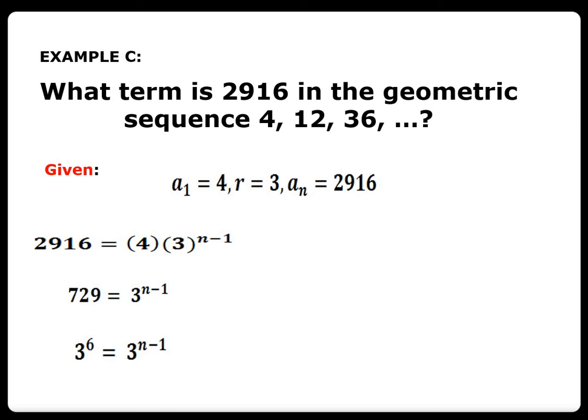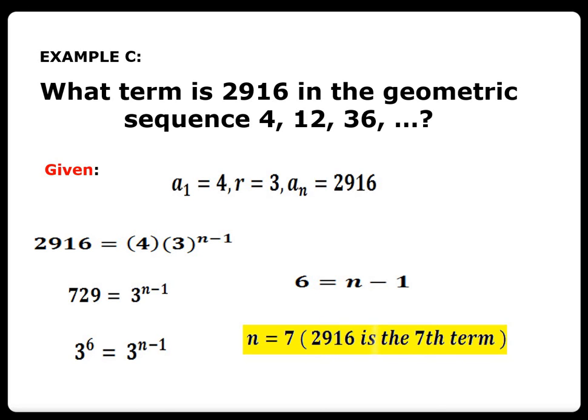If they have the same base, just copy the exponent. So 6 equals n minus 1, and solving for n gives n = 7. Therefore, 2916 is the 7th term of the given geometric sequence 4, 12, 36.